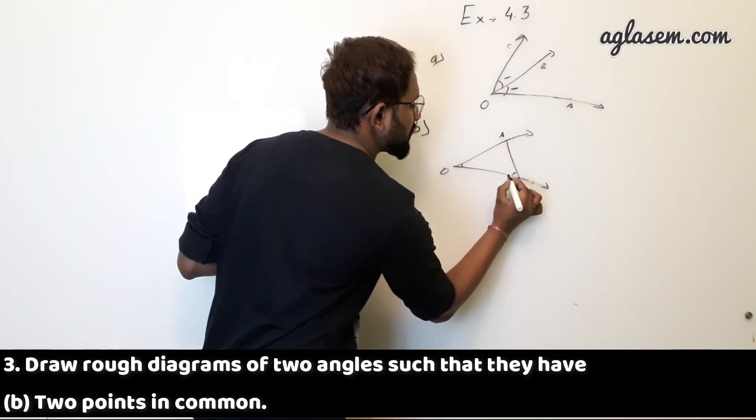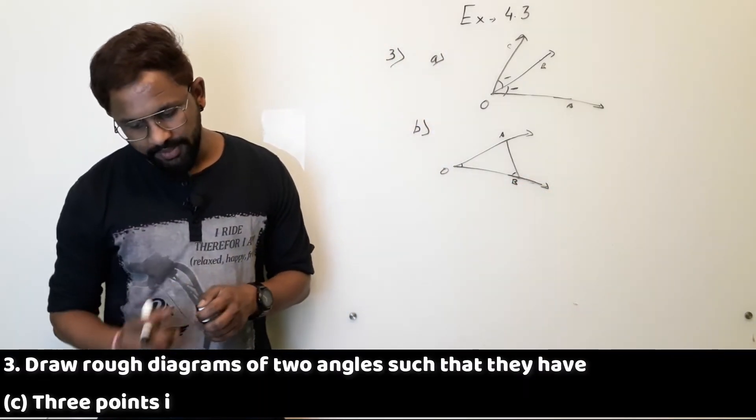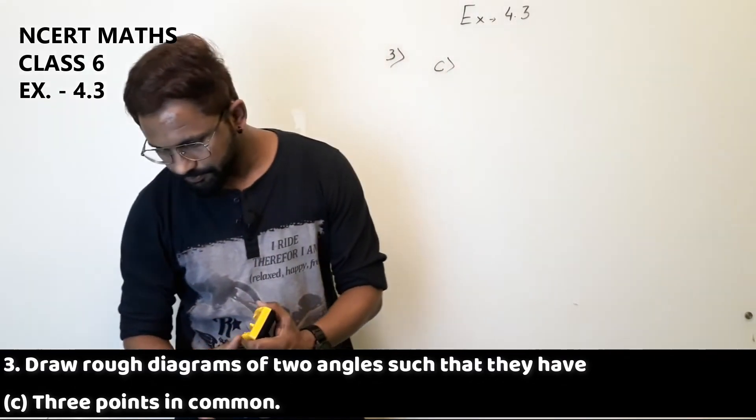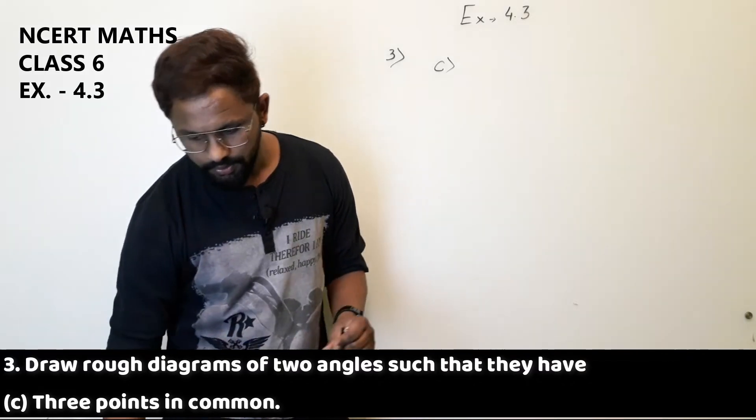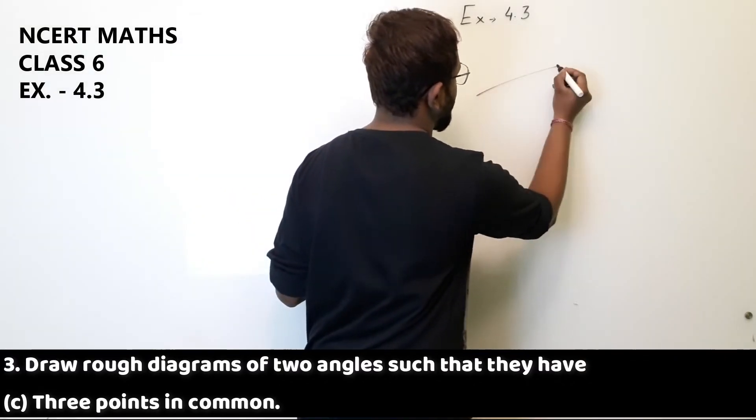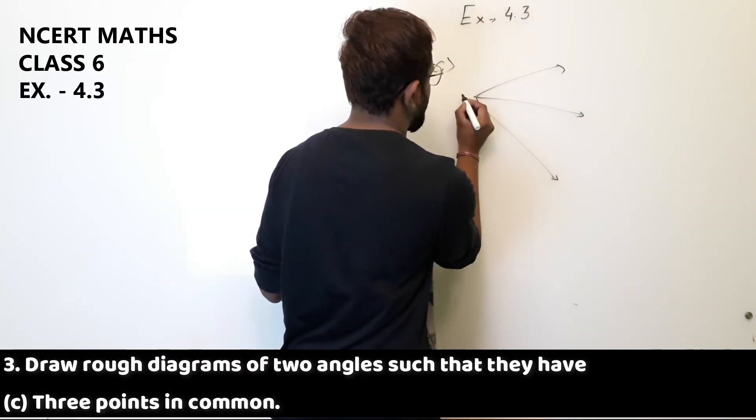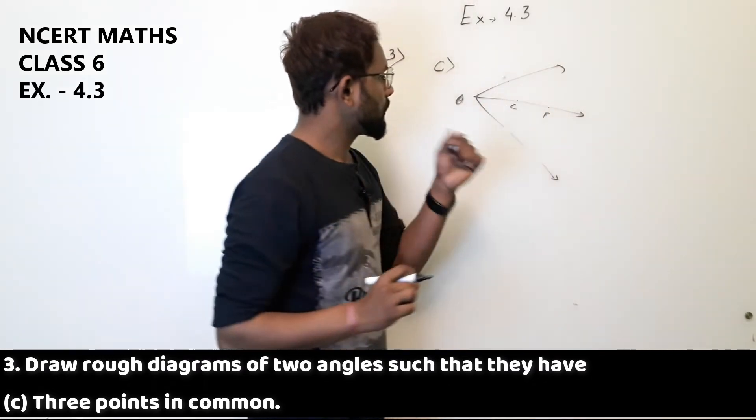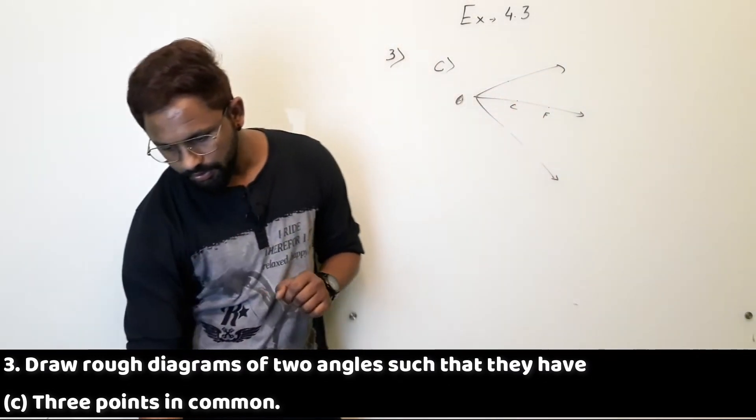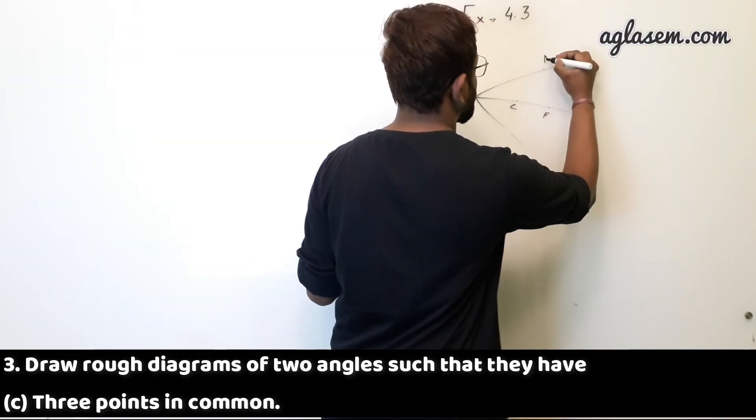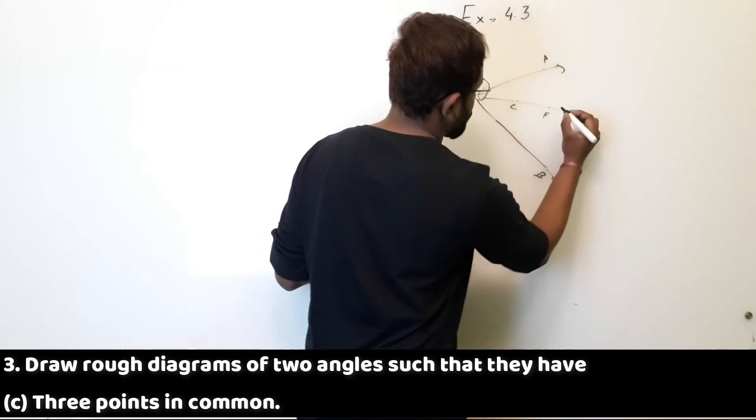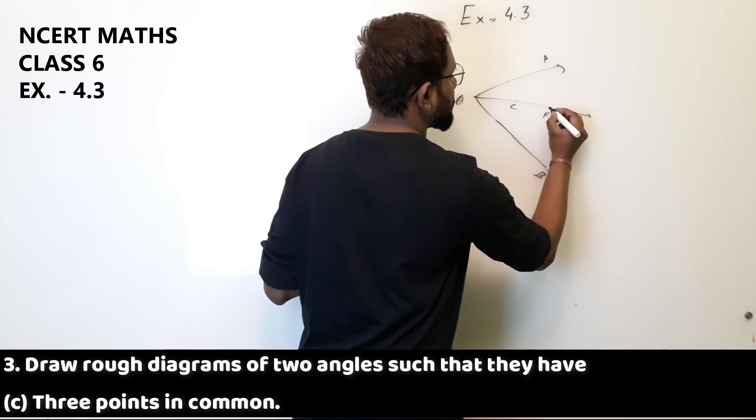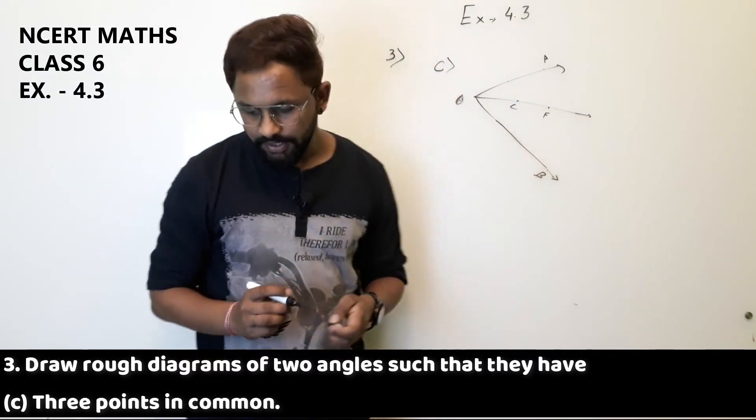Let's name it A and B. Part C, three points in common. So I'll be drawing over here. Part C, it can be drawn like this. This is a common point for this angle, this is also a common point for this, and this is also a common point for this angle. Both angles, so three points are common from this.